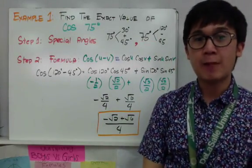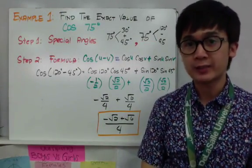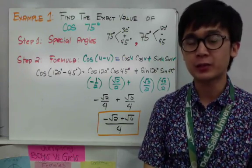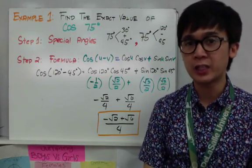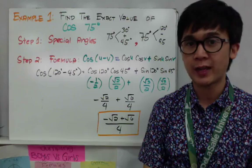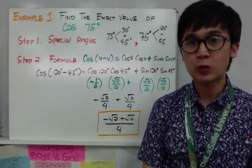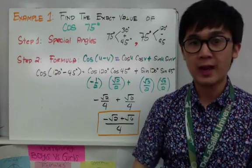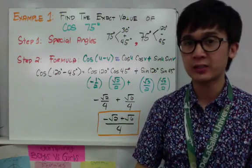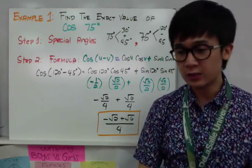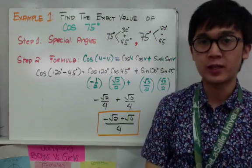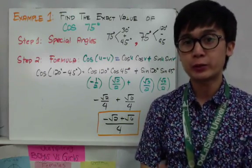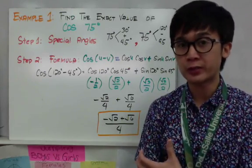For the first example, we need to find the exact value of cosine 75 degrees. Cosine 75 degrees is not considered a special angle in trigonometry, and if you check your unit circle, 75 degrees is not there. The unit circle only contains special angles like 45 degrees, 30 degrees, 90 degrees, and so on.